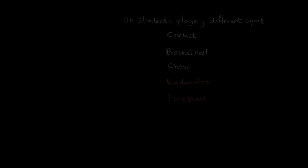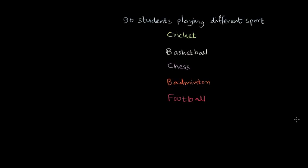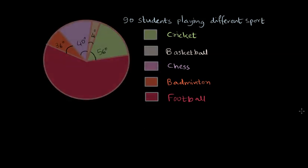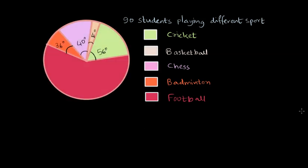We want to learn the applications of pie charts. There is a problem wherein 90 students play different sports in a school: cricket, basketball, chess, badminton, and football. The distribution of how many students play each sport is given by this pie diagram.